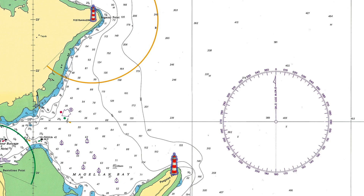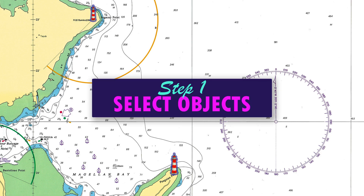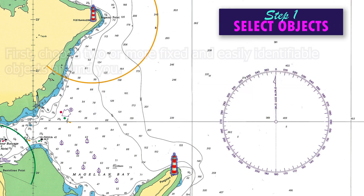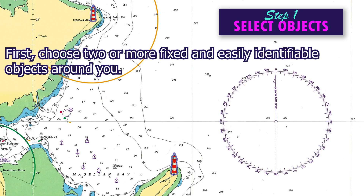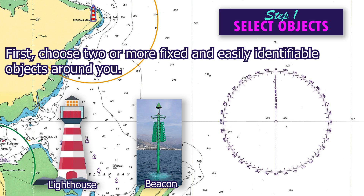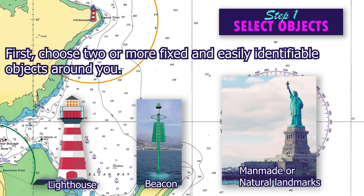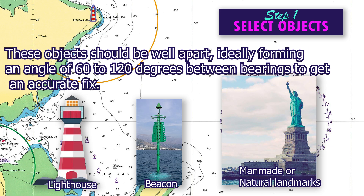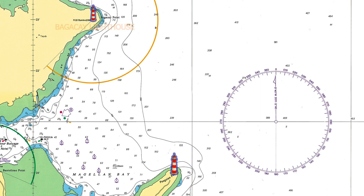Here are the steps on how to determine a ship's fixed position using cross bearings. Step 1: Select objects. First, choose two or more fixed and easily identifiable objects around you, such as a lighthouse, beacon, or man-made landmark. These objects should be well apart, ideally forming an angle of 60 to 120 degrees between bearings to get an accurate fix. In this example, we'll use Bagakei Lighthouse and Mabini Lighthouse.